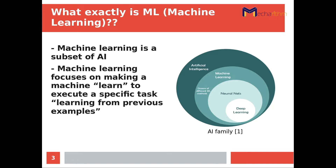So what machine learning is — it refers to the ability of the machine to work on the solution of a problem, or try to execute a specific task, by introducing several training examples for this machine. So it means the ability of the machine to learn how to execute a specific task, and hence the name machine learning.